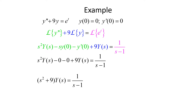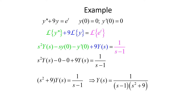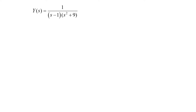We simplify the left-hand side by combining our Y(s) terms together, giving us s squared plus 9 times Y(s) equals 1 over s minus 1. To get Y(s) by itself, we divide both sides by s squared plus 9, so Y(s) equals 1 over (s minus 1)(s squared plus 9).